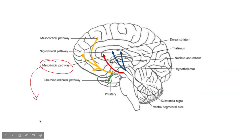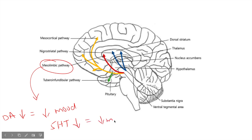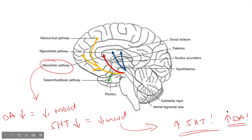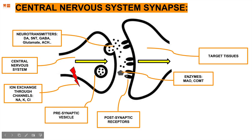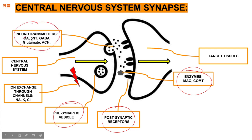In the mesolimbic pathway, a reduction in dopamine leads to a reduction in mood. Similarly, a reduction in serotonin leads to a reduction in mood. Our goal is to flip this equation: increase serotonin and increase dopamine. We already know the synapse: presynaptic vesicle, postsynaptic receptor, enzymes like MAO and COMT that break down neurotransmitters such as dopamine, serotonin, GABA, glutamate, and acetylcholine. Today we'll specifically focus on chloride channels, as anxiolytic drugs target these.